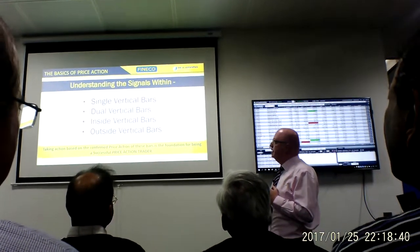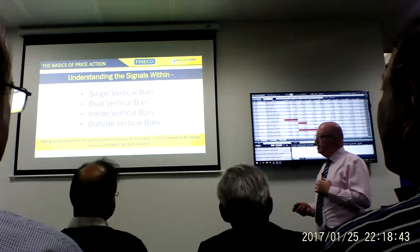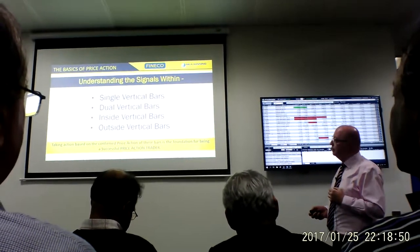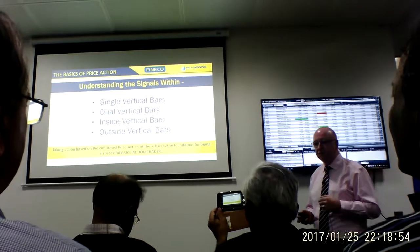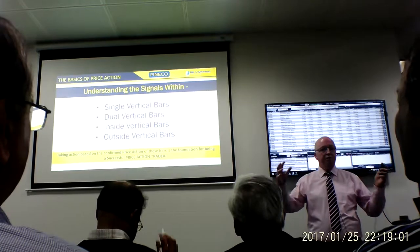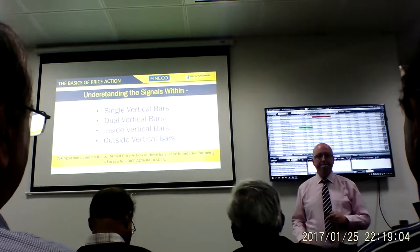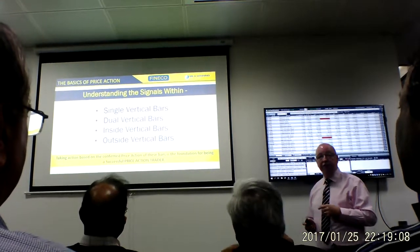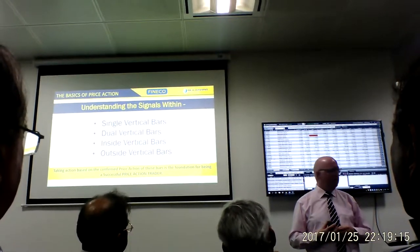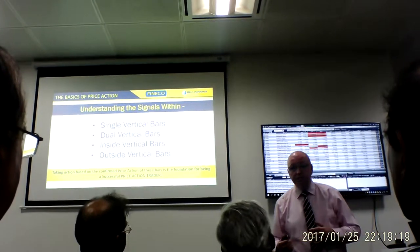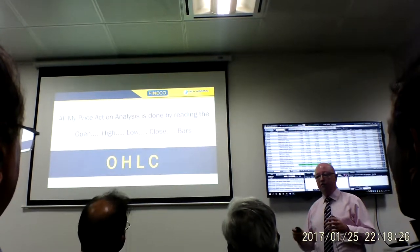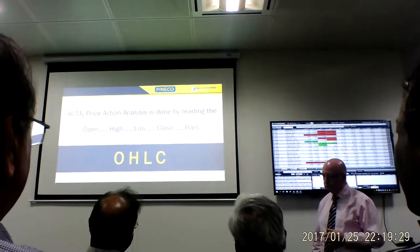Understanding the basics of price action begins with reading the signals within single vertical bars. Some of this can be quite boring — don't let it be, it's very, very important. Dual vertical bars, inside vertical bars, and outside vertical bars. It's all right knowing the information, but what do you also want to know? Why? What's the point in knowing whether we've got a bullish vertical bar or a bearish vertical bar? We want to know what that actually means.